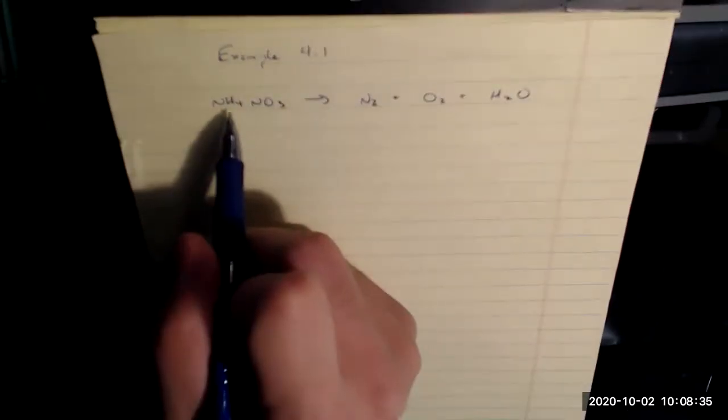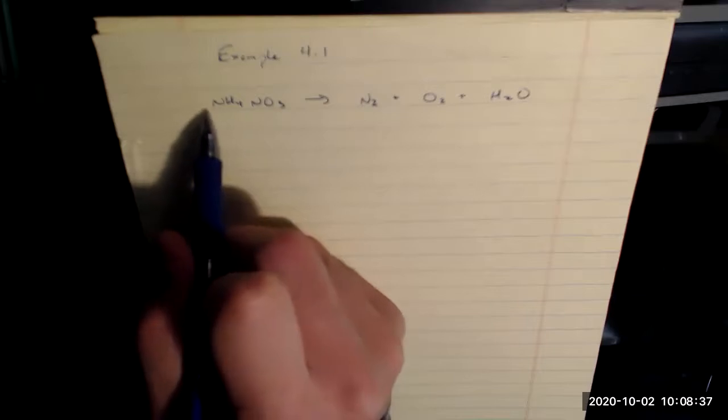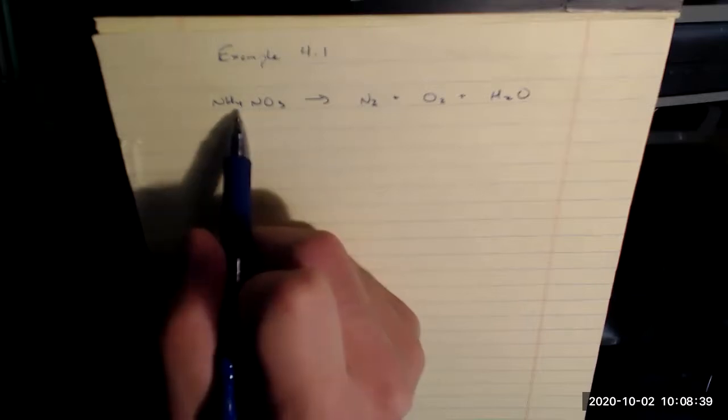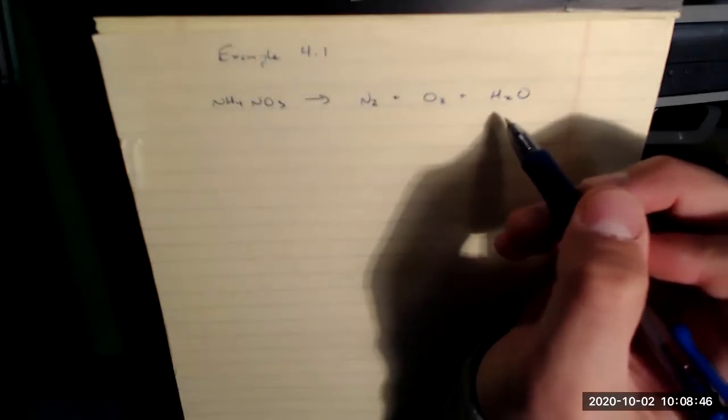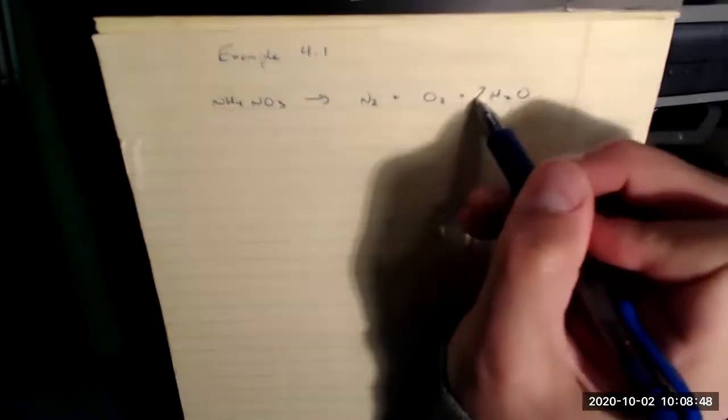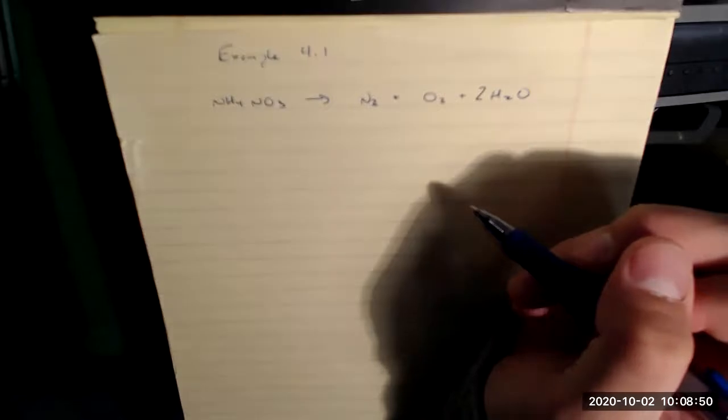What about hydrogen? H4, still just the coefficient of one over here. So four hydrogens on the left side, H2, only two hydrogens on the product side, but I can fix that by putting a coefficient of two over here.